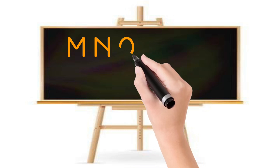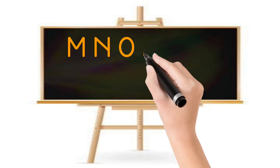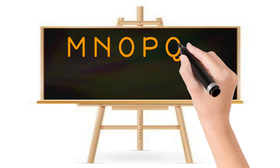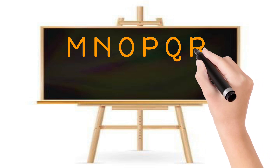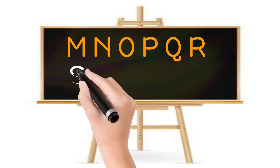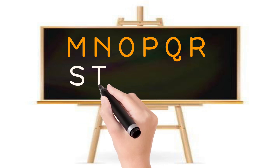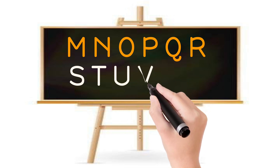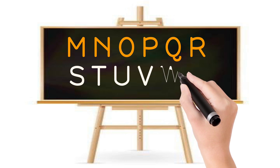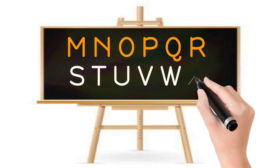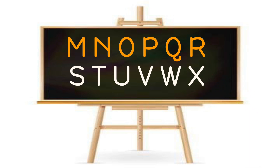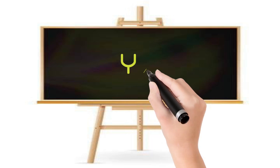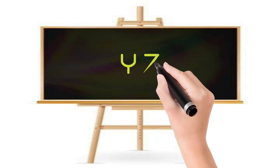N for nest, O for orange, P for potato, Q for queen, R for rabbit, S for sun, T for television, U for umbrella, V for violin, W for watch, X for xylophone, Y for yoyo, and Z for zebra.